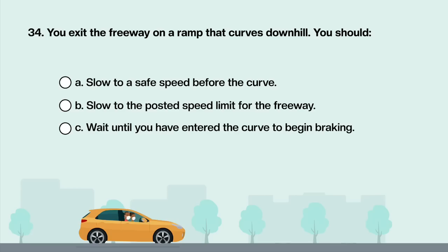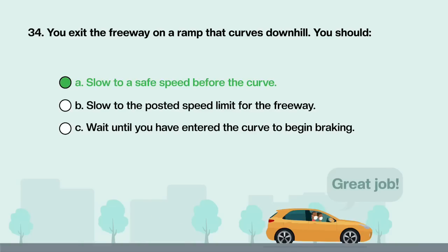You exit the freeway on a ramp that curves downhill. You should: A. Slow to a safe speed before the curve. B. Slow to the posted speed limit for the freeway. C. Wait until you have entered the curve to begin braking. Answer is A: Slow to a safe speed before the curve.